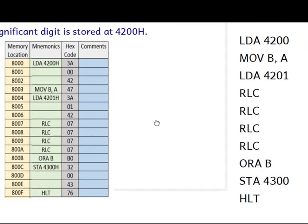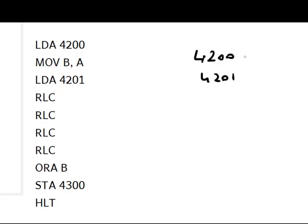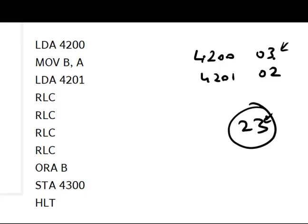Let us understand the program. We start with LDA 4200. Let us assume memory location 4200 has 03 stored, and 4201 has 02. So if we pack these digits, what we get is 23 — because 3 is the least significant digit stored at 4200. This is our expected answer.